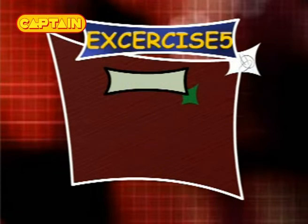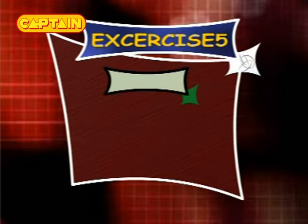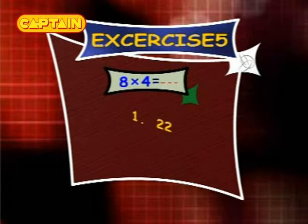Exercise 5: 8×4 equals — options are 22, 42, 32.